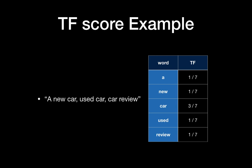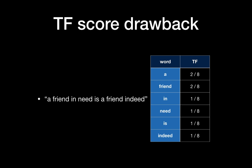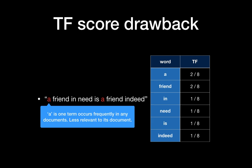However, the TF score has a drawback. For the sentence 'a friend in need is a friend indeed,' both 'a' and 'friend' have a TF score of 2/8 — the same score. Intuitively, 'friend' should be the most informative word, but 'a' scores equally. The word 'a' occurs frequently in any document and is less relevant to each specific document. We want to lower the measure if a term is just a common word across documents — that's why we introduce IDF.